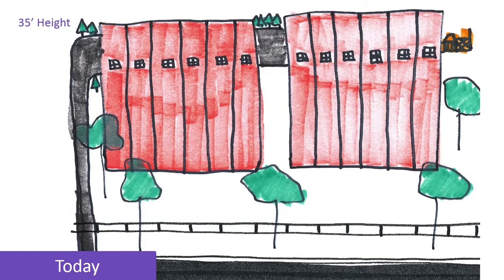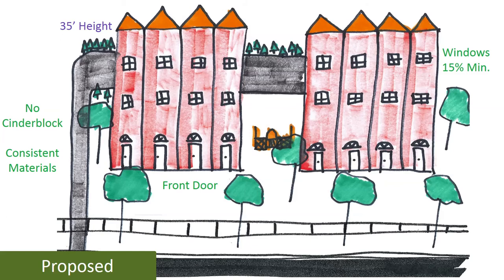From the aesthetic view, there are really only height requirements that we have today. Many other additional amenities — whether front porches, windows, or other features — are usually done through proffers. In our 'Why is the Zoning Being Updated' video, we explain how proffers have changed and limited the town's ability to accept those requirements on new development. So what's being proposed is to take those items out of proffers and bring them into the zoning code as requirements: no visible cinder block, consistent materials on the front and sides, a front door, and a minimum 15% window area.